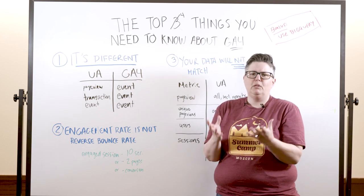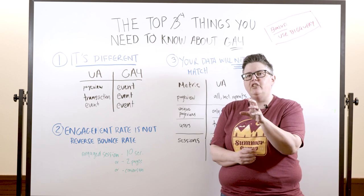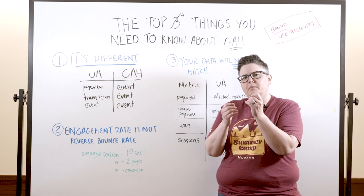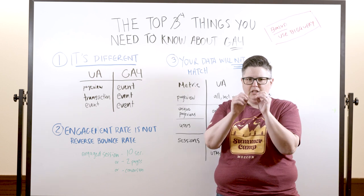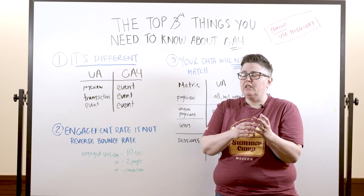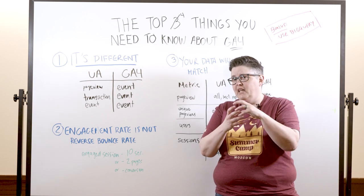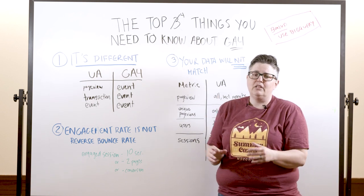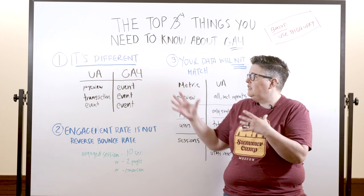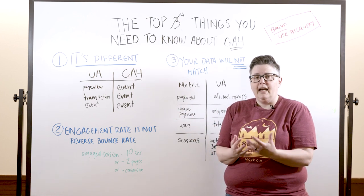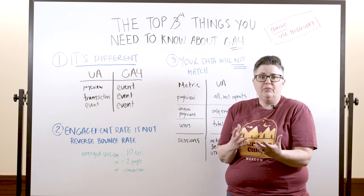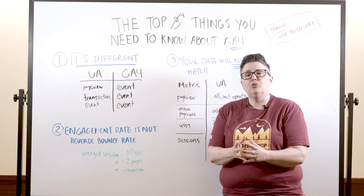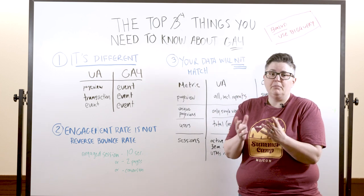One of the things people always wanted to report on in Universal Analytics is what pages did people see and how did that relate to conversion rate? That was really tricky because a page view was at the hit scope level, whereas conversion rate is a session scoped thing — you couldn't combine them unless you did some fancy blending in Data Studio. Now in GA4, because everything's an event, you have a lot more freedom to slice and dice your data and figure out the entire user journey on the path to conversion.